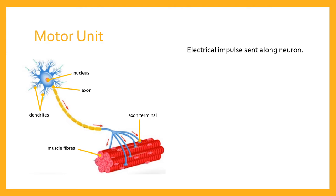The neuromuscular junction is simply the gap between the end of the neuron — known as the axon terminal — and the muscle fibre itself, or the outer layer, the sarcolemma of the muscle fibre. So there's a tiny little gap, and somehow that electrical impulse has got to jump from the axon terminal across that gap, sometimes called the synaptic cleft, to reach the sarcolemma.